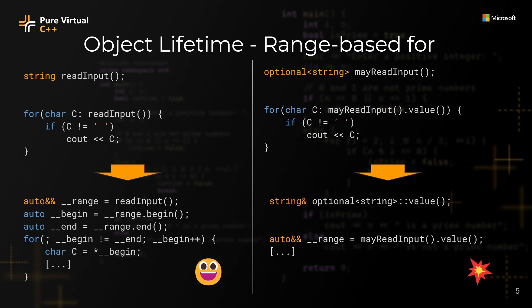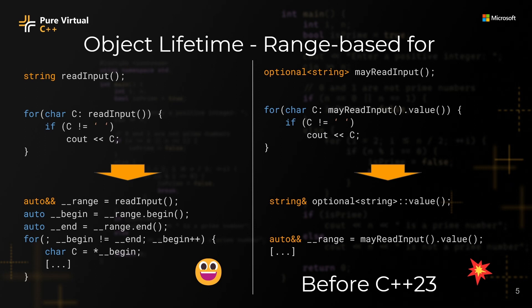This is an error that is really easy to make. Fortunately, starting from C++23, all of the temporary objects in the range expression will be kept alive for the whole loop.